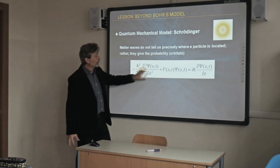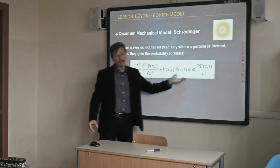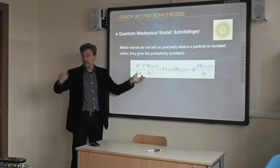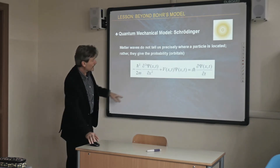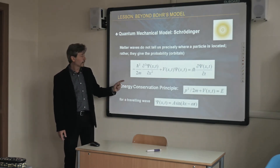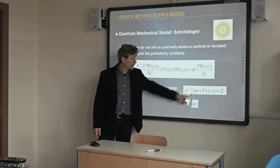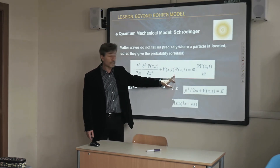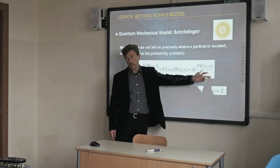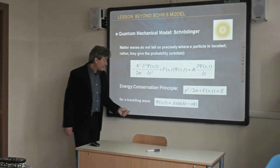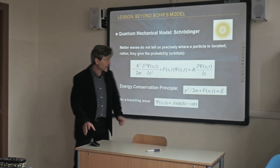This is the formula introduced by Schrödinger to identify this volume. We don't have the level of mathematics to fully understand this formula, but we can understand its spirit: it is an energy conservation principle. The first part is kinetic energy, the second part is potential energy, and their sum gives total energy. Psi is simply a traveling wave — an amplitude multiplied by the sine of omega t.